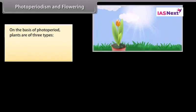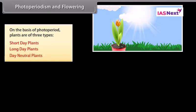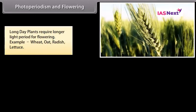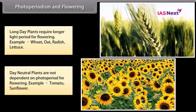On the basis of photoperiod, plants are of three types: short day plants, long day plants, and day neutral plants. Short day plants require a longer dark period for flowering — examples: tobacco, rice, dahlia. Long day plants require a longer light period for flowering — examples: wheat, oat, radish, lettuce. Day neutral plants are not dependent on photoperiod for flowering — examples: tomato, sunflower.